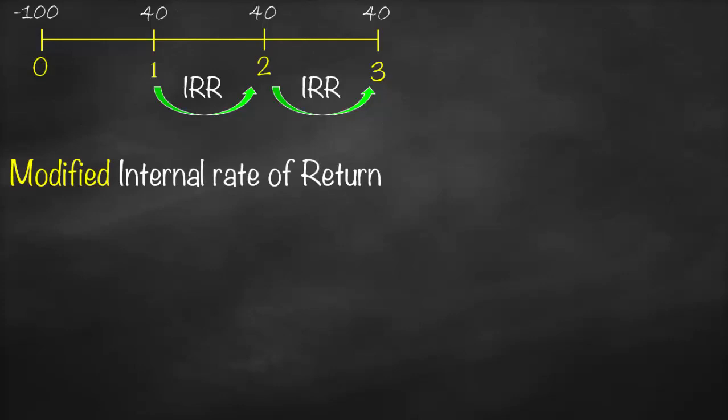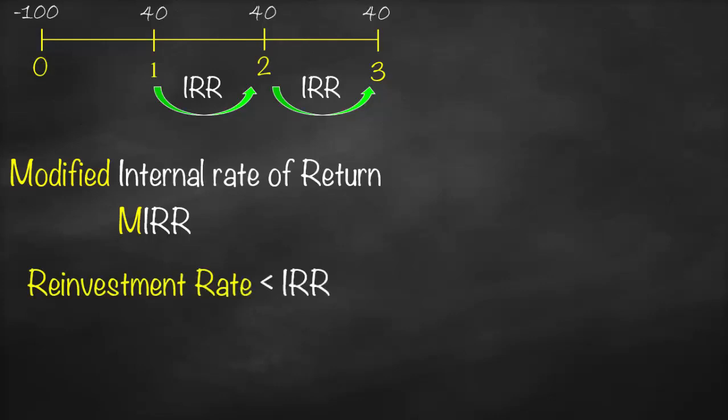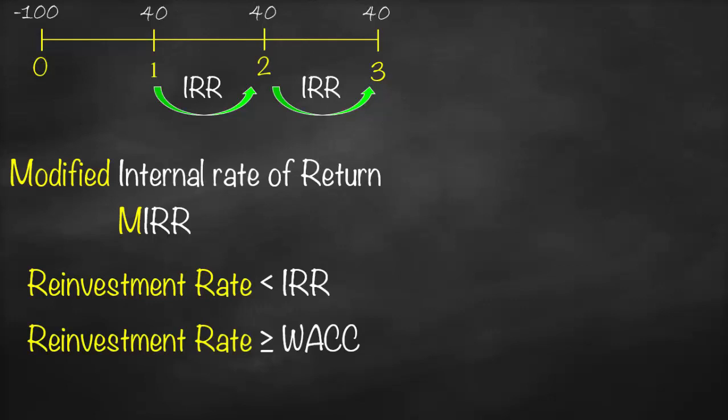That's why we are going to calculate a new tool called the Modified Internal Rate of Return, or MIRR. In MIRR, the reinvestment rate will be lower than the internal rate of return, but it must be greater than or equal to WACC. Therefore, the lowest rate of return we will accept from any project equals WACC. That's why in any question, if I don't give you a reinvestment rate, it means we accept the lowest rate, which equals WACC.